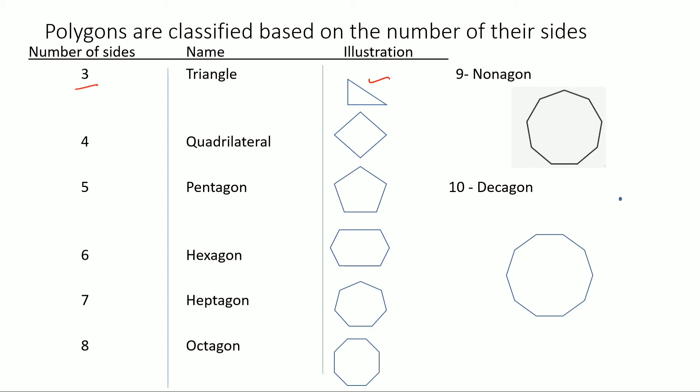If the polygon has four sides, then we call it a quadrilateral. Like this is an example of a quadrilateral. We do have other quadrilaterals also like squares, rectangles, rhombus, parallelogram, kite. These are all examples of quadrilaterals.